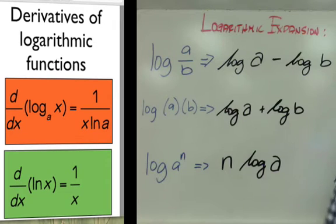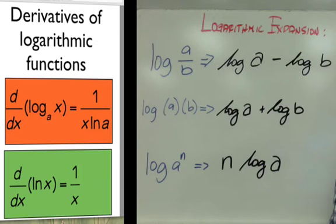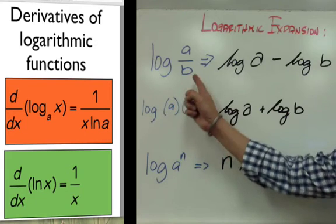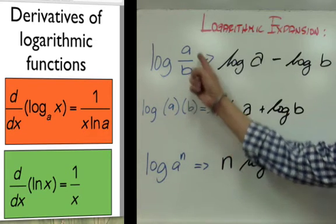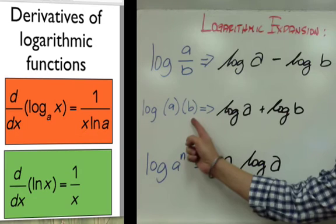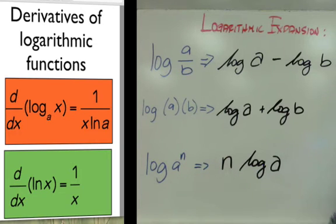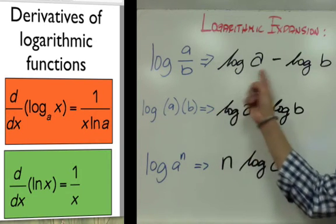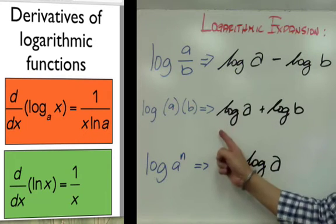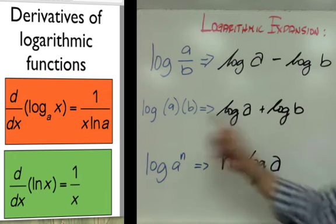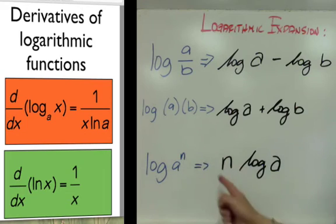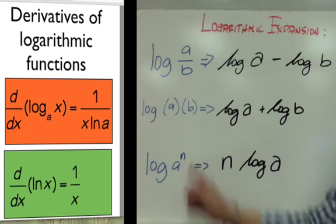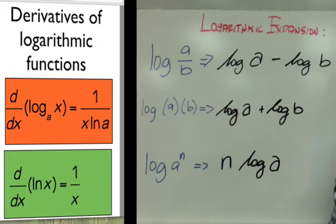You also need to remember how to expand logarithms. There are three expansions: the expansion for a over b gives logarithm of a minus logarithm of b; the expansion for a times b gives logarithm of a plus logarithm of b; and when you have an exponent, you get n times logarithm of a.